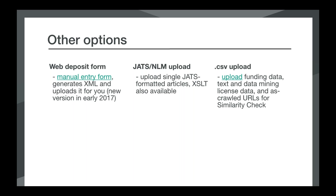If you have a system that produces JATS or NLM XML, we've written an XSLT transformation for that. You can upload JATS or NLM formatted files article by article to our web form. If you want to expand an existing metadata record by adding license and funding information, you can do that by uploading a CSV file with that information to our system using the web form, and there's a link to instructions for doing that in this slide.